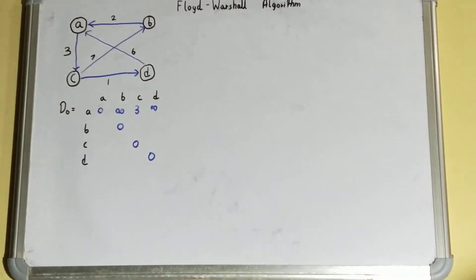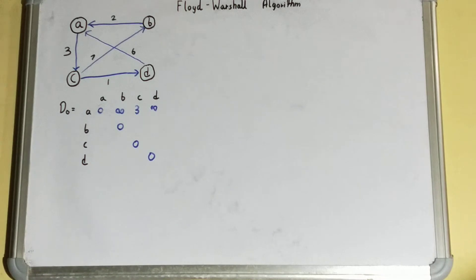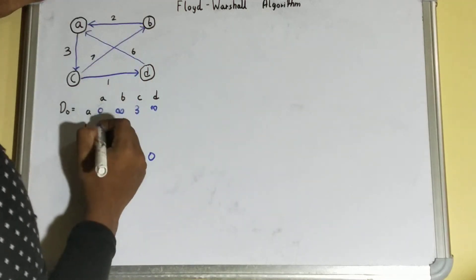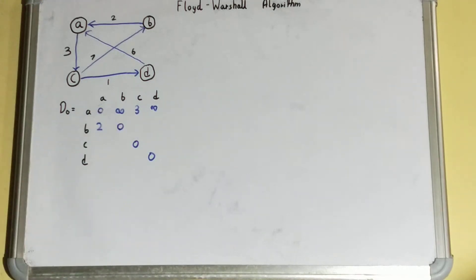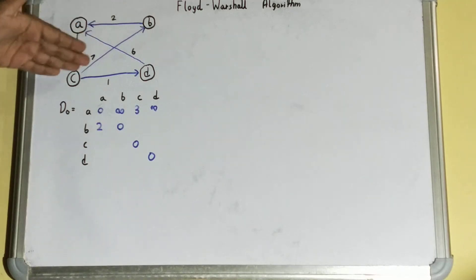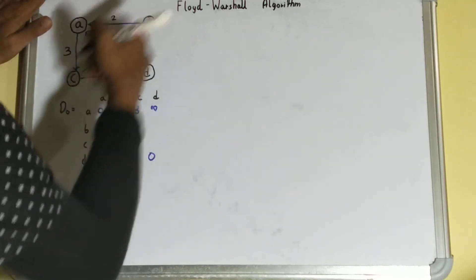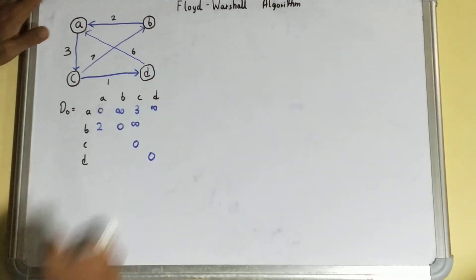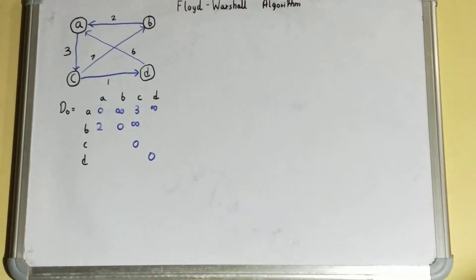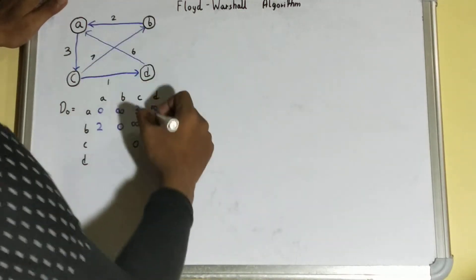Next is B to A — if we see, B to A is two. Then B to C: there is no way because it is a directed graph, so it is going one way but not coming back, making it infinity. And B to D is also infinity — there is no arrow.